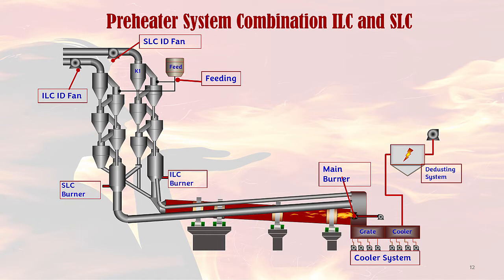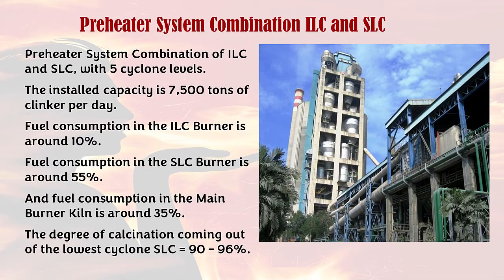This is an example of a precalciner system configuration with a combination of ILC and SLC. This type of preheater system has two tertiary air ducts from the cooler system; the diameter of the ILC tertiary air duct is smaller than the tertiary air duct for SLC. The fuel combustion in the SLC burner only relies on air from the cooler, while the ILC burner takes the remaining combustion air from the kiln and some from the cooler. This example has five cyclone levels with an installed capacity of 7,500 tons of clinker per day. Fuel consumption in the ILC burner is around 10 percent, in the SLC burner around 55 percent, and in the main burner kiln around 35 percent. The degree of calcination from the lowest cyclone SLC equals 90 to 96 percent.